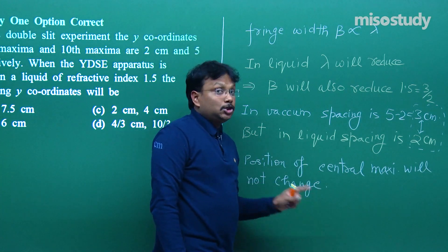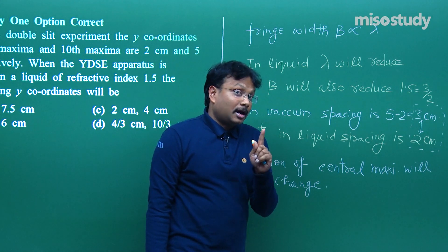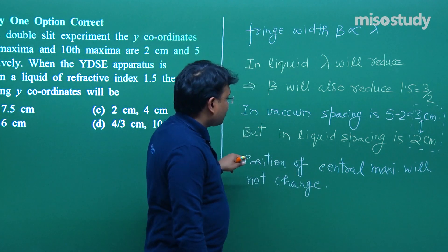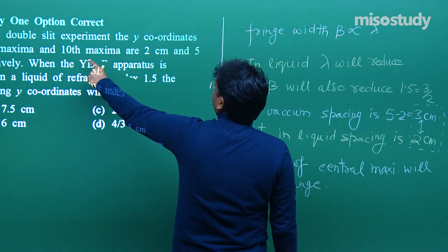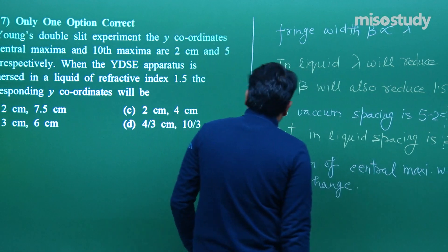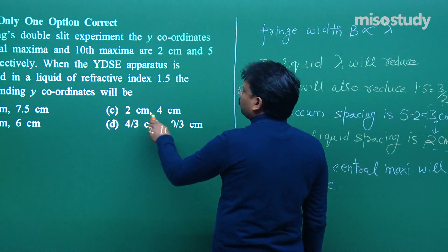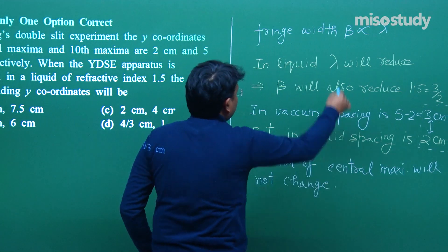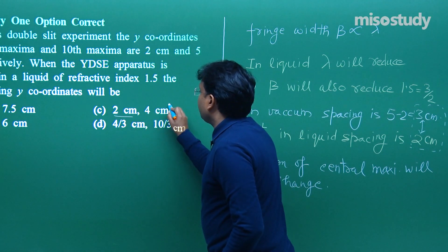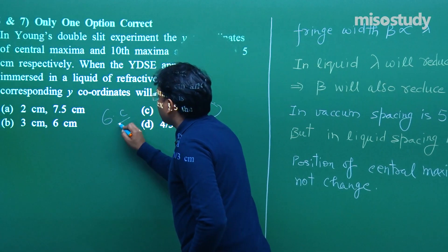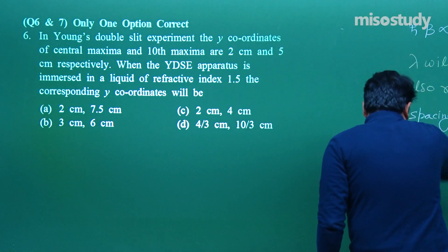So central maxima will remain at 2 cm, and the 10th maxima — since fringe width reduces by 1.5 times — will be at 2 + (3/1.5) = 2 + 2 = 4 cm. I needed to explain this long solution to put focus on all these important aspects from which you can derive the values. It's not a big question, it's a simple question — you just need to think a little and use basic facts.